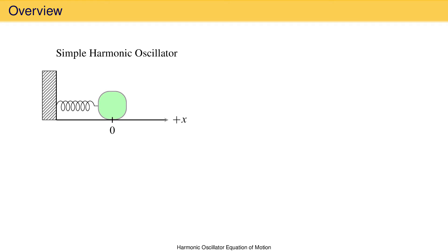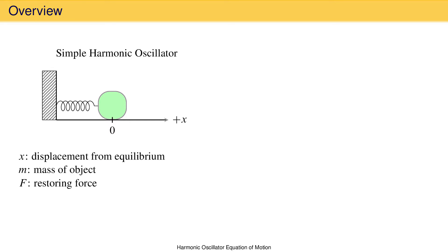We want to think about the motion of an idealized system called a simple harmonic oscillator, which consists of a mass on the end of a spring that provides a harmonic restoring force. X is the displacement of the mass from its equilibrium position of zero, M is the mass of the object, and F is the restoring force, which is proportional to the mass's displacement but always opposite in direction. There's no friction or gravity, and the spring is massless.